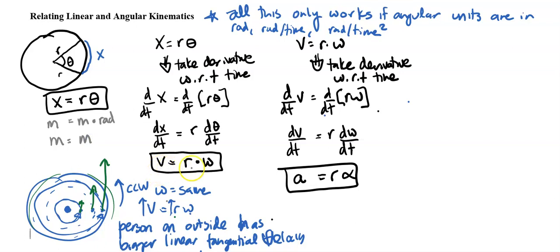Let's check the other thing. So for r, that's m, omega is radians per second. But again, we can kind of ignore that radians because it's essentially a ratio. So then we're just left for linear velocity, meters per second. And again, this velocity is going to be the linear or tangential velocity, while omega is the angular velocity.